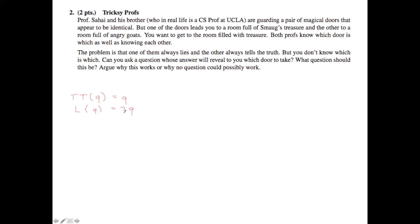One really key thing to notice here is that if we compose these functions — for example, truth-teller composed with liar, or liar composed with truth-teller — what we end up with is not q in both cases. You can check this for yourself pretty quickly. This means we need to ask one of them something about what the other one would say, which is the English equivalent of composing these two functions.